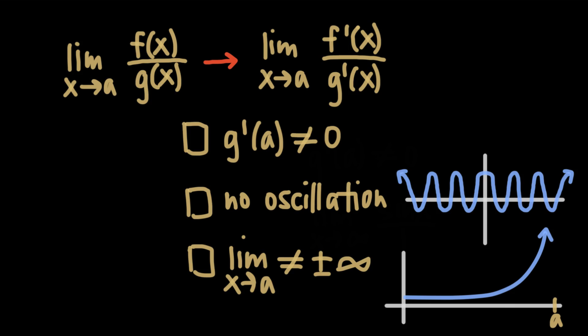What we can say, though, is that if all three conditions are met — if g′ does not equal zero, if there's no oscillation in the function as x approaches a, and if the limit as x goes to a is not positive or negative infinity — then L'Hôpital's rule is something we can use. If any of these conditions applies and you aren't able to use L'Hôpital's rule, don't panic. You still may be able to go back to some simpler methods of solving limits and manipulate the original function into something simpler, avoiding L'Hôpital's rule altogether.